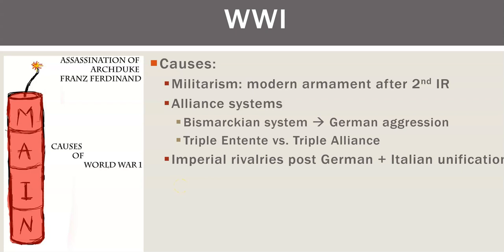All this happens after German and Italian unification — the Italians in 1870 and the Germans in 1871. When teaching unification, it seems like it just happens in a year or two, but this stuff stretched on for a long time.